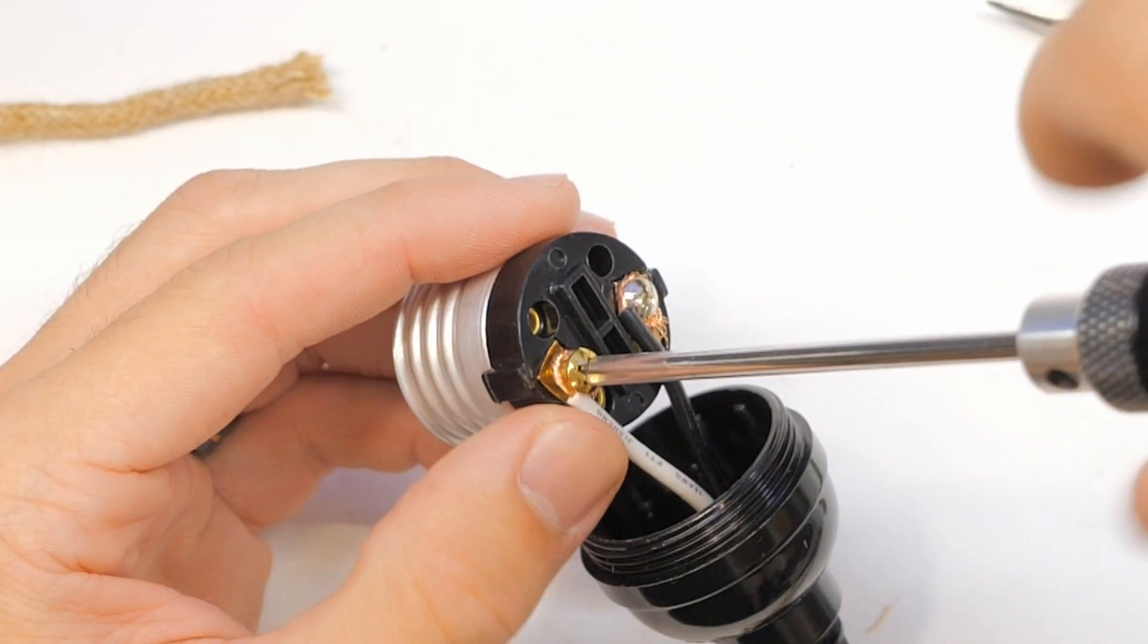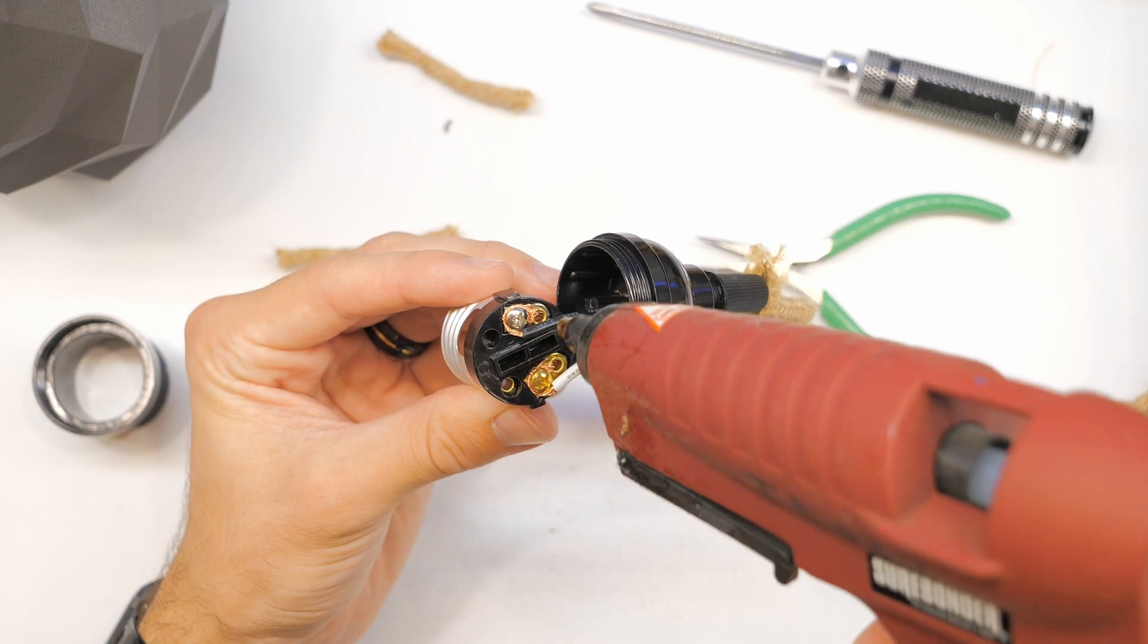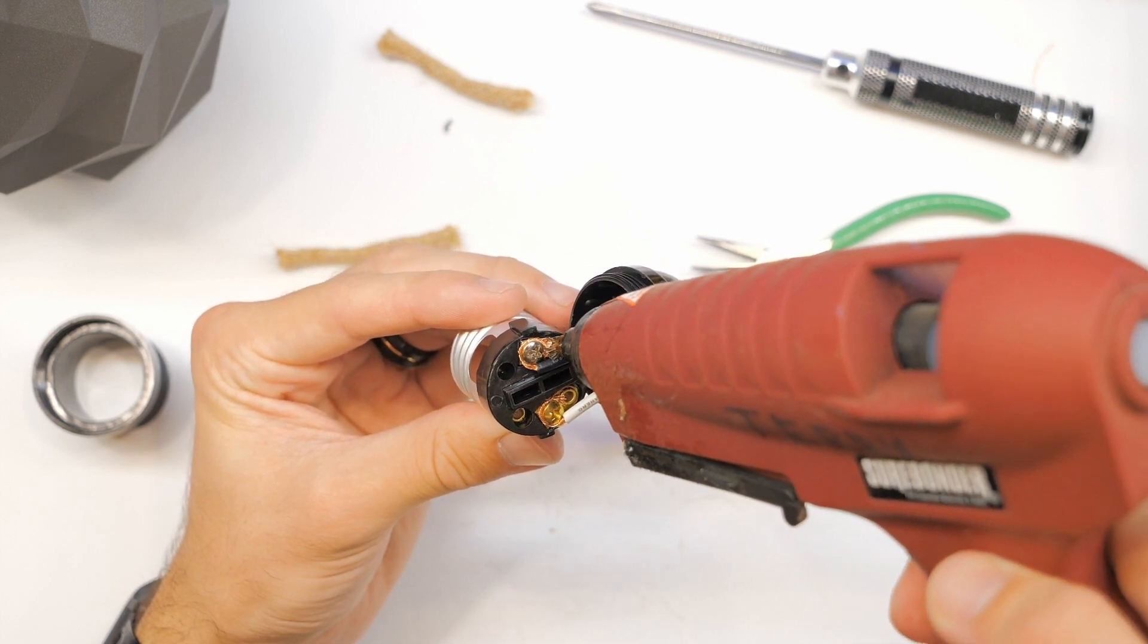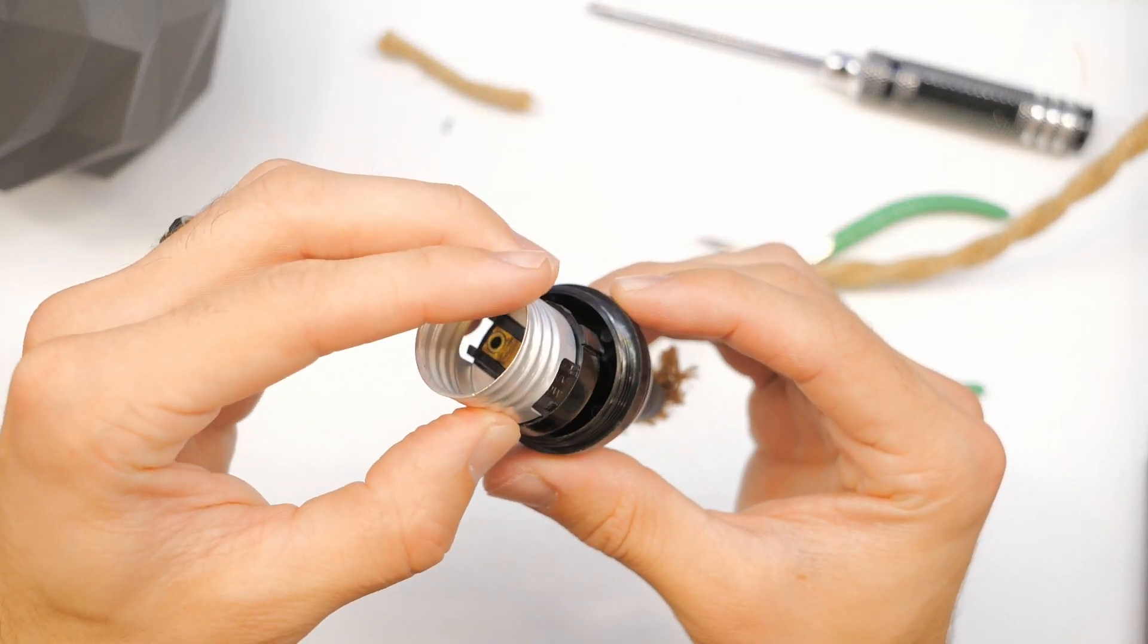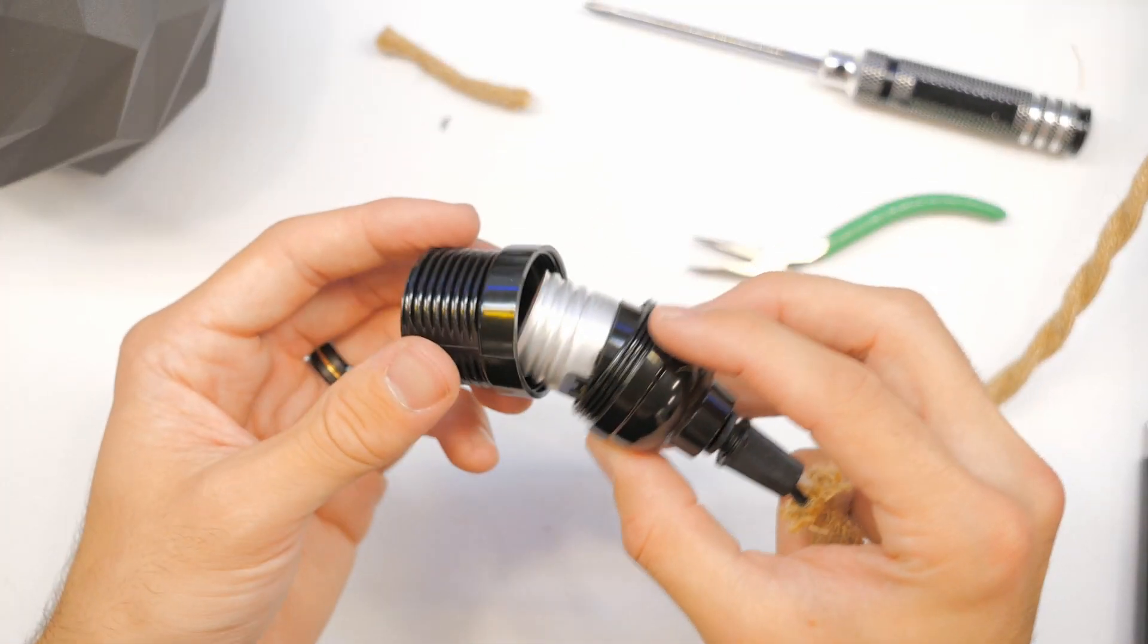I'm going to add a little bit of hot glue to cover all the wires to secure it and keep any kind of shorts from happening. Then once that's done, we'll just put it all back in and screw it back together.